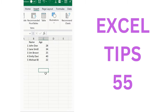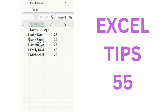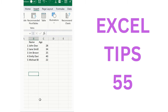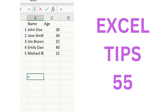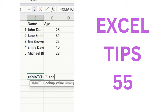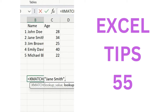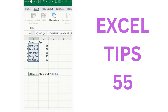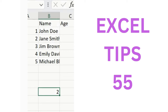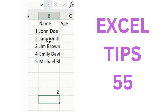XMATCH is used to find the position of a value in a range or array — similar to the MATCH function but more flexible and powerful. Add the XMATCH function, specify the lookup value (e.g., 'Jane Smith'), then define the lookup array. Close the bracket and press Enter. The result shows Jane Smith is in the second position. Thanks for watching.